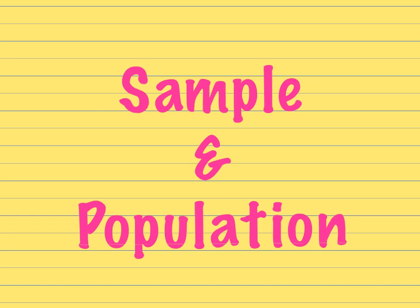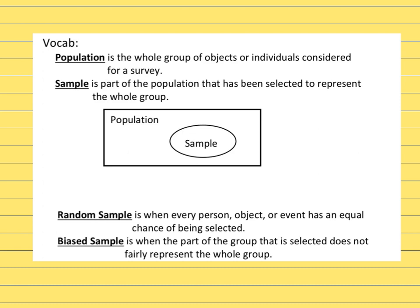Today this video is going to go over samples and population. First of all we need to know what those words mean. Population is the whole group of either people or objects that's going to be considered for some type of survey — the whole group that's trying to be considered. Then the sample is only part of the population that's supposed to represent the whole group.